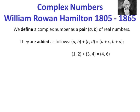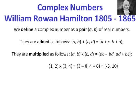You then define how to add and multiply them. Addition is natural: (A,B) + (C,D) = (A+C, B+D). Multiplication is more sophisticated: (A,B) × (C,D) = (AC − BD, AD + BC). For example, (1,2) × (3,4) = (1×3 − 2×4, 1×4 + 2×3) = (3−8, 4+6) = (−5, 10).